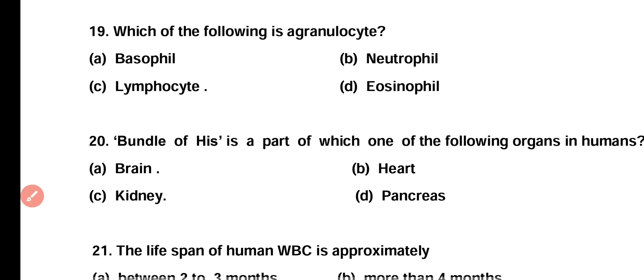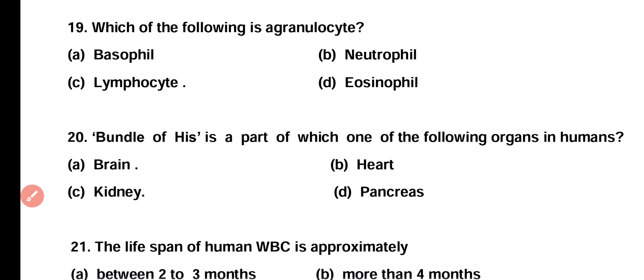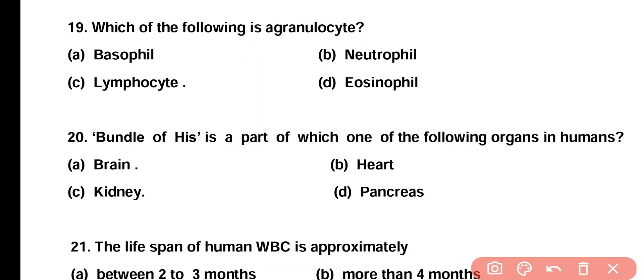Question number 19. Which of the following is an agranulocyte? Basophil, neutrophil, lymphocyte, or eosinophil? Correct answer is option C. Lymphocyte is an agranulocyte among the given options.